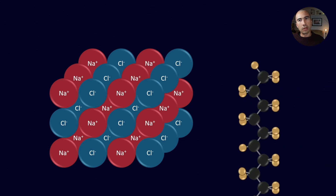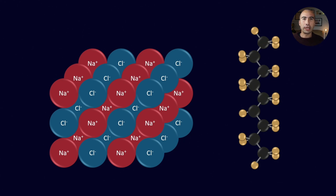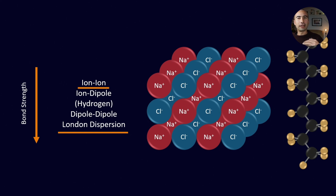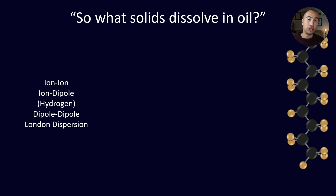Now if we contrast this with a branched hydrocarbon, the hydrocarbon doesn't really have any electrical activity to help it pull off one of those sodium or chlorine ions. Oil molecules, when they're non-polar, can only rely on London dispersion forces, which in comparison are very weak — they are kind of the bottom of the food chain when it comes to interactive forces. The difference between ion-ion and London dispersion forces is too great, meaning oil is not able to effectively pull off those ions. So now we have a good understanding of those differences, and we can try to answer the question: what kinds of solids do dissolve in oil?